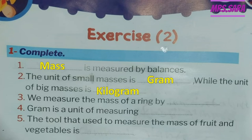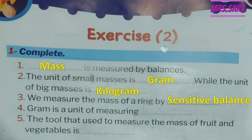Number 3: We measured the mass and we are talking about a ring. A ring is a small mass, so we need the measuring tool of small mass, which is the sensitive balance. Number 4: Gram is a unit of measuring what? Gram is the measuring unit of small mass — so gram is a unit of measuring small mass.